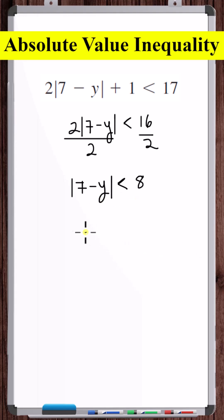So this is equivalent to the compound and inequality. 7 minus y is less than 8 at the same time is greater than minus 8.